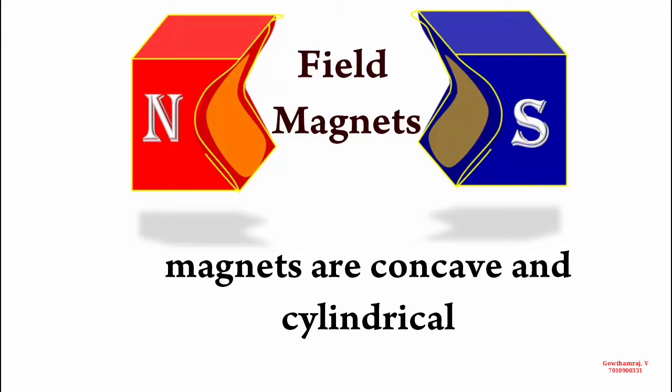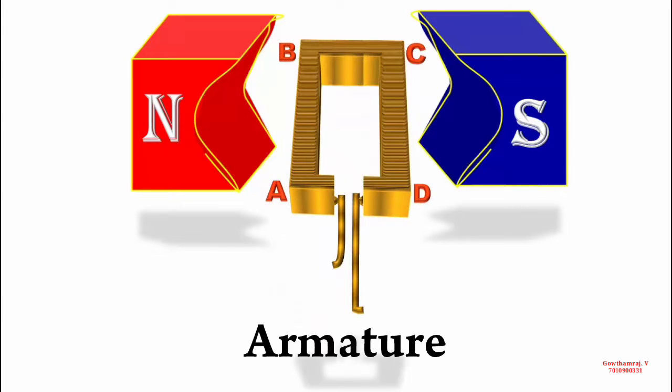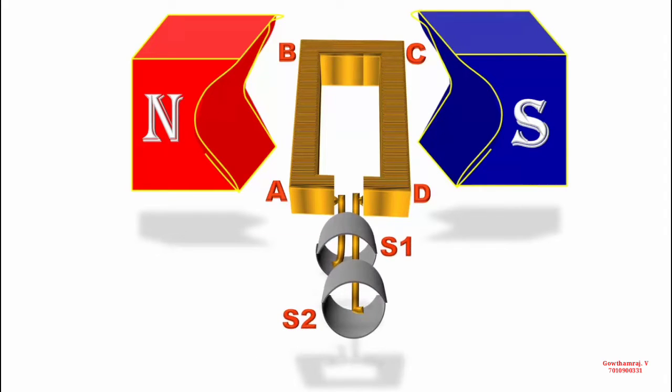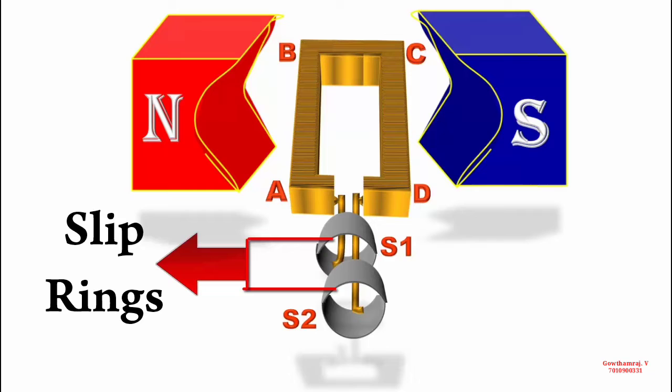Within the field magnets we have placed the armature coil ABCD. It is a rectangular coil with large number of turns of copper wire wound around a soft iron core. The two ends of armature are attached with two slip rings. These rings rotate with the armature coil. The slip rings are made of metal and insulated from each other.